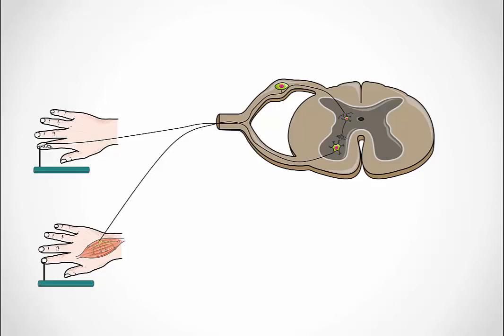The sensory neuron fires and sends its signal along into the central nervous system via the dorsal root into the dorsal horn. Here, it synapses with the interneuron, which fires, sending its signal to the motor neuron, that then fires out of the central nervous system to activate the muscle and move the hand off the stimulus.